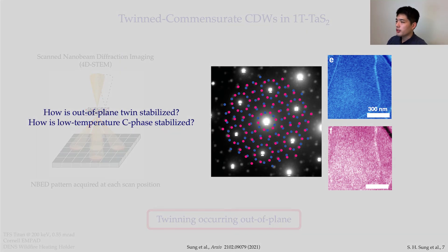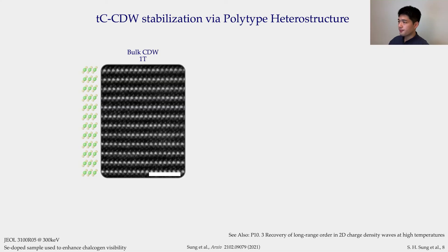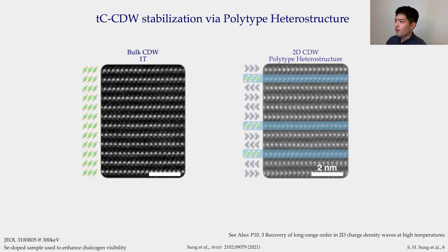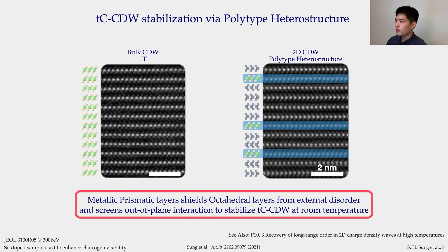So how is the out-of-plane twin stabilized, and how is this low-temperature phase stabilized? The answer is the polytype heterostructure. On the left, we see a 1T sample where every layer is in octahedral coordination. Here CDWs form in bulk with out-of-plane interaction that drives a single-twinned NC phase at room temperature. By forming a polytype heterostructure, we can endotaxially encapsulate monolayers of TaS₂ between metallic prismatic layers. The metallic layers screen out-of-plane interaction to stabilize the twin, and they shield external disorder to stabilize the low-temperature commensurate phase at room temperature.